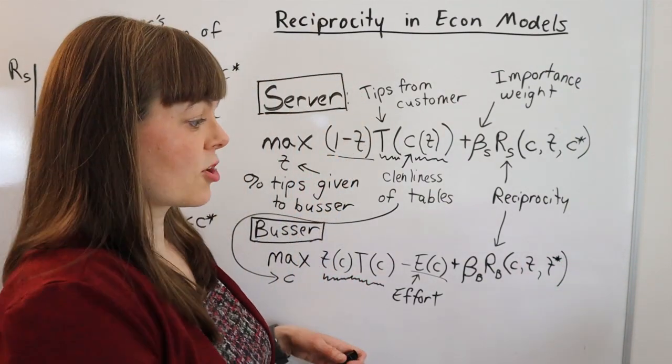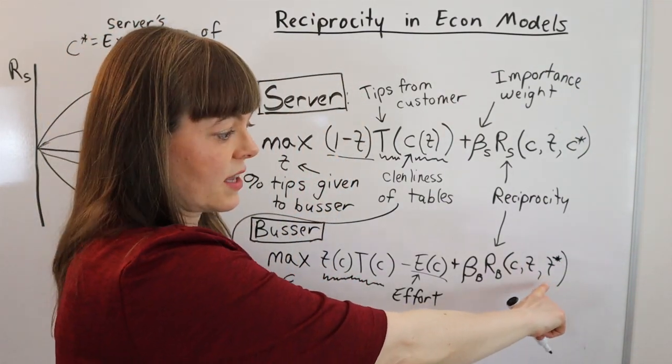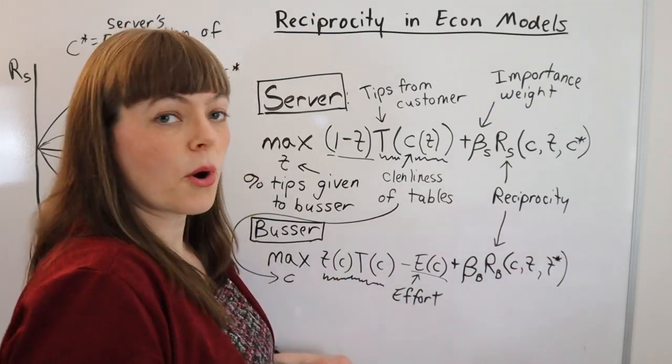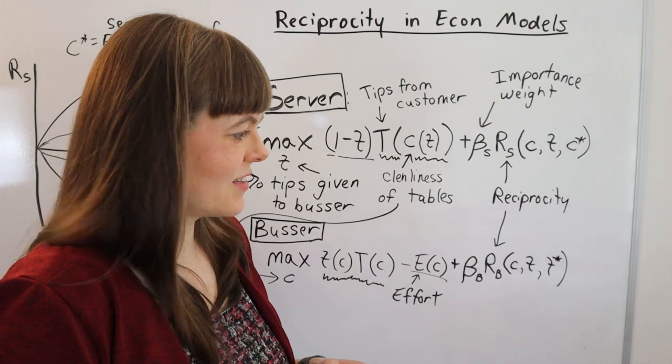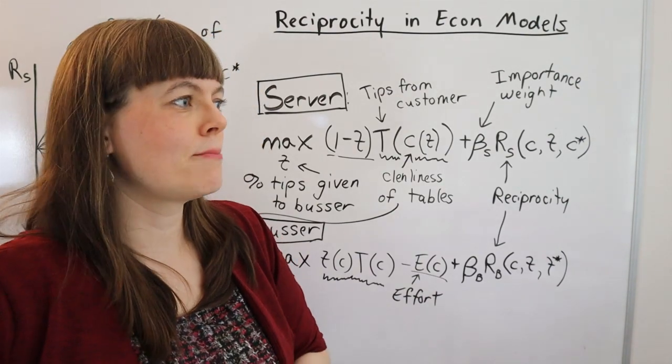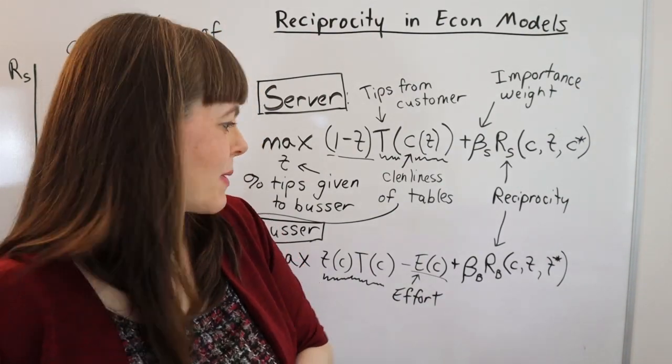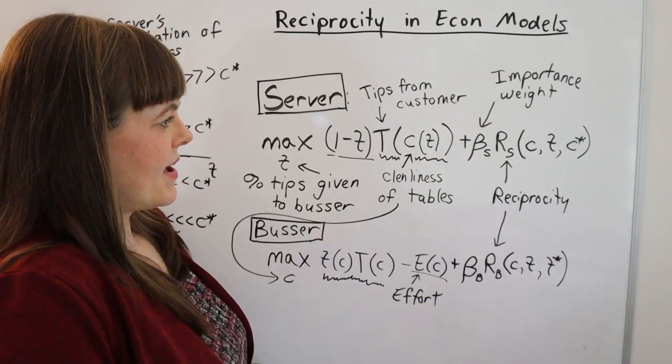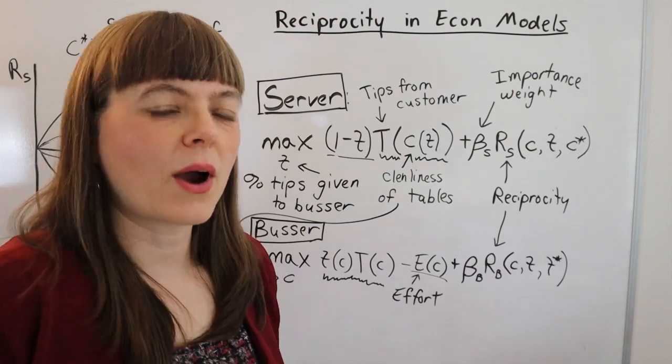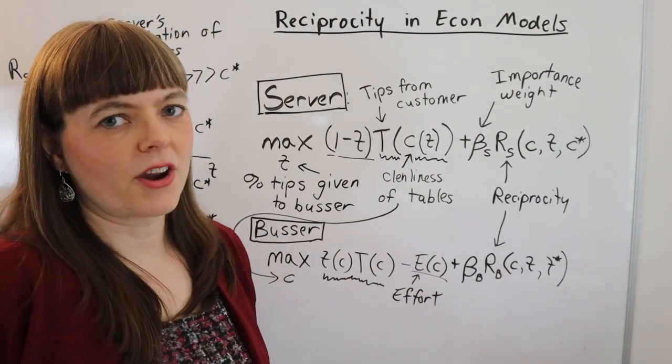Now it's possible that the busser may expect no tips, like it's totally fine for that to be zero, or it's fine for that to be way higher than is realistic because human beings don't always have accurate expectations about what their coworkers owe them. But I'm just sort of showing you how you would set up the scenario.